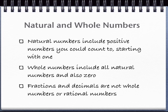To review, natural numbers are also called counting numbers and include any positive number you might count to, starting with one. Whole numbers include all natural numbers as well as zero. So all natural numbers are whole numbers. Zero is a whole number but not a natural number.